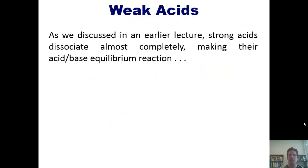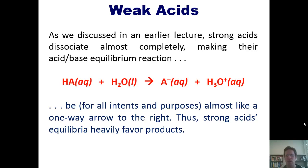Let's get started. As we discussed in an earlier lecture, to which I'll post right here, strong acids dissociate almost completely, making their acid-base equilibrium reaction be, for all intents and purposes, almost like a one-way arrow to the right. Thus, strong acids equilibria heavily favor products. In other words, you don't really have a two-way arrow here. It's all one-way.